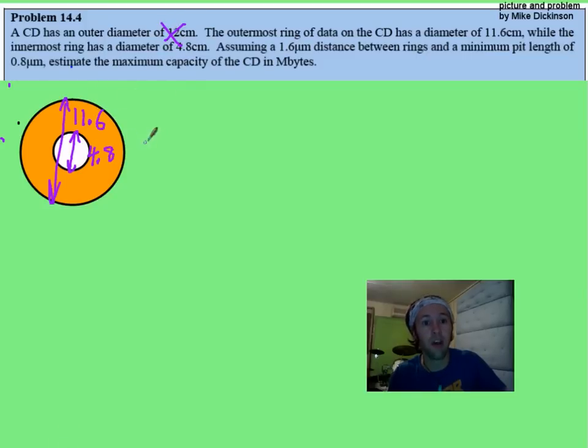Ignore this 12, that's not helpful. Let's figure out how much width there is and how many rings we can have. You just do the 11.6 minus the 4.8.